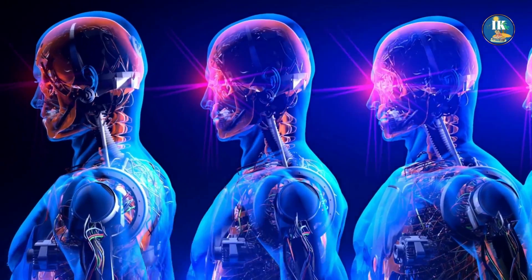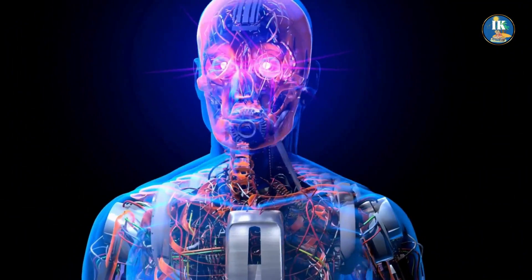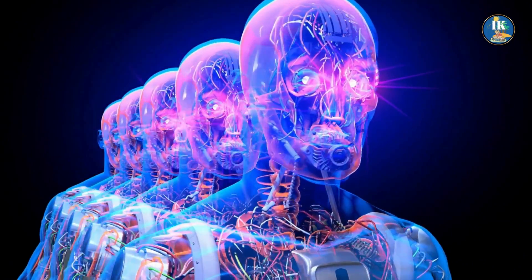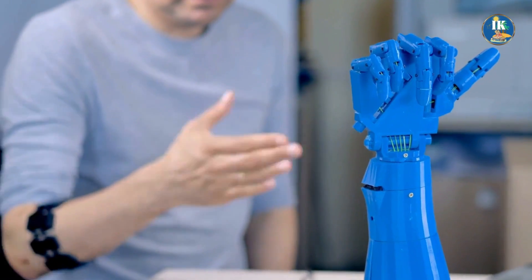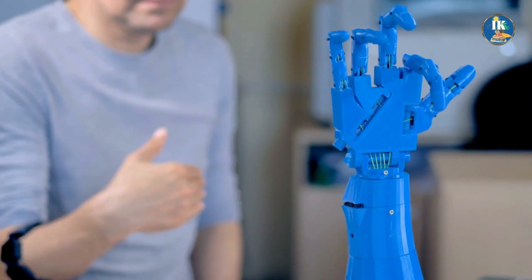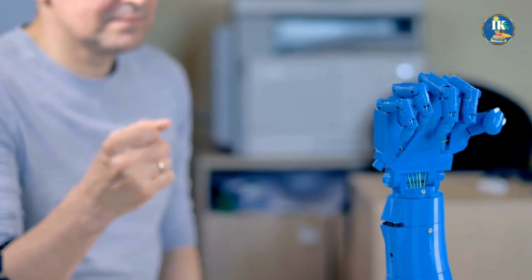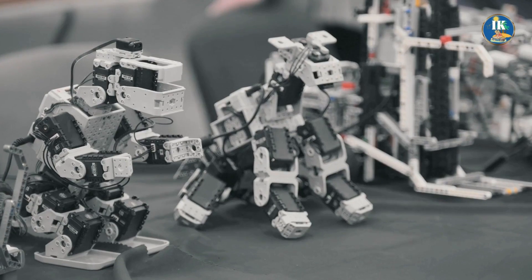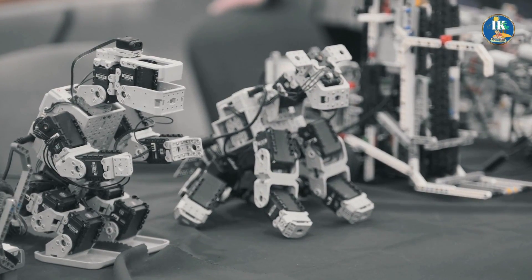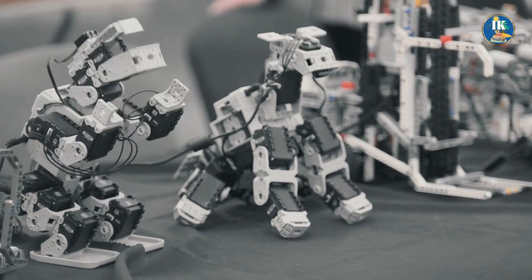Another major advance in modern robotics is the use of sensors and other advanced technologies to give robots a greater awareness of their environment. This includes things like cameras, laser scanners, and other sensors that allow robots to see and interact with their surroundings in much the same way that humans do. With this enhanced awareness, robots can navigate complex environments, avoid obstacles, and work more efficiently than ever before.